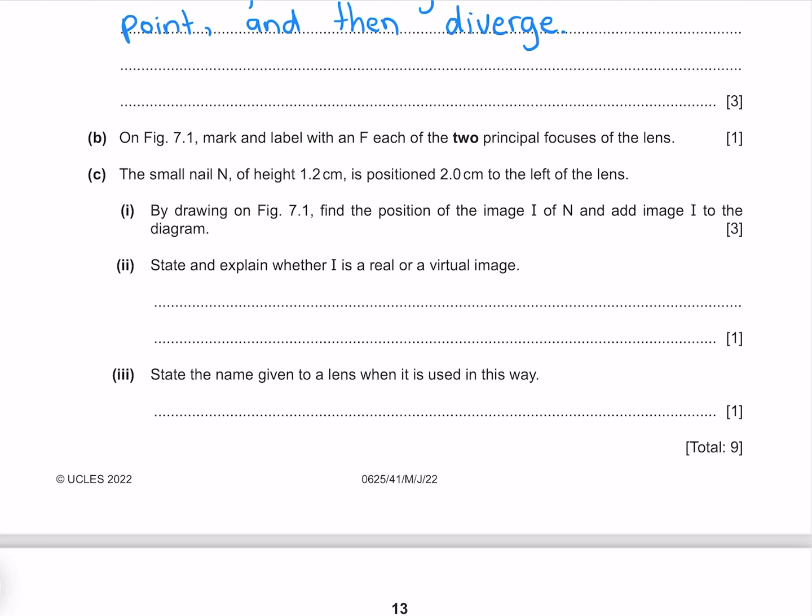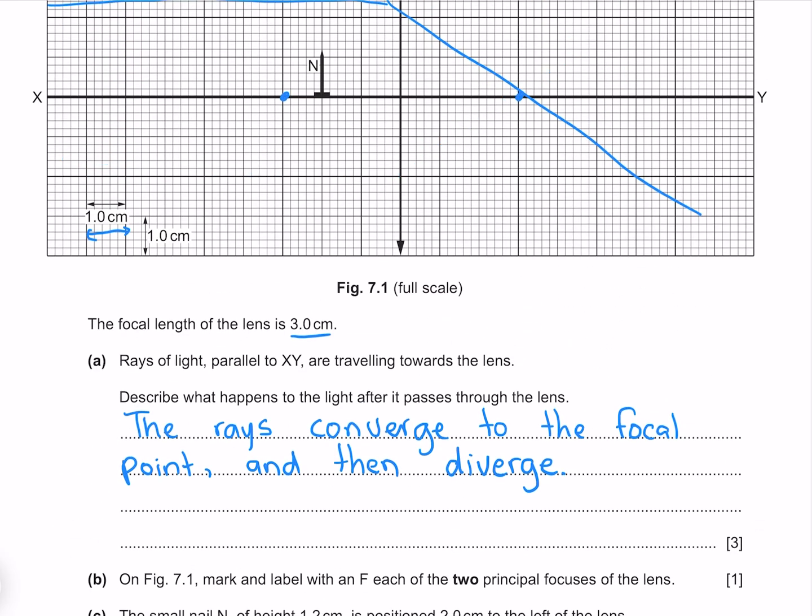On figure 7.1, mark and label with an F each of the two principal focuses of the lens. I've already marked them, so we just need to label them.